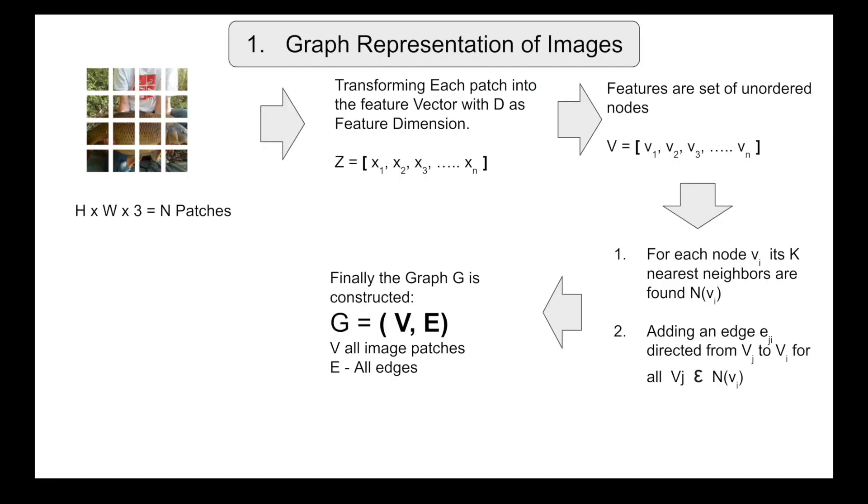So let's look into the first step, the graph representation of the image. Initially you are going to get the images, and images will have height and width and they can also have three different channels RGB. So depending on what kind of image you have, those images will be sliced into N different patches.